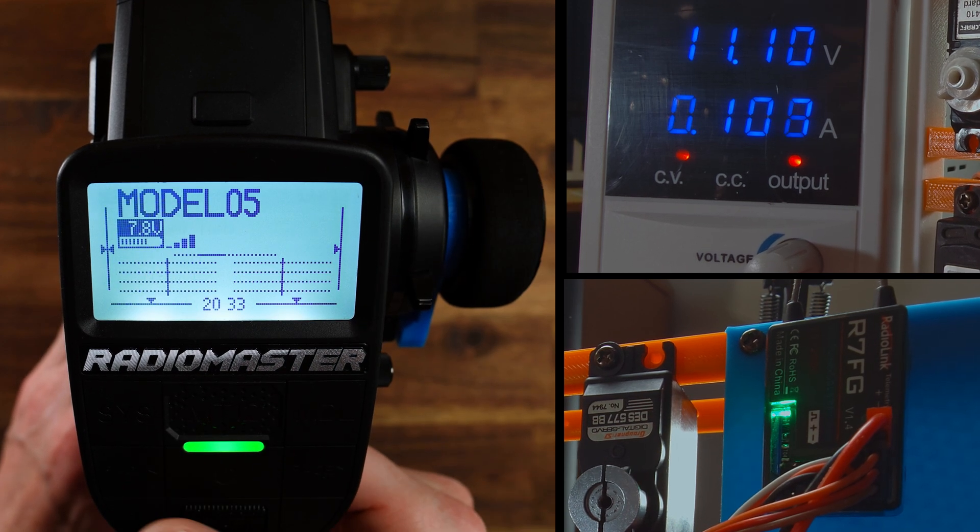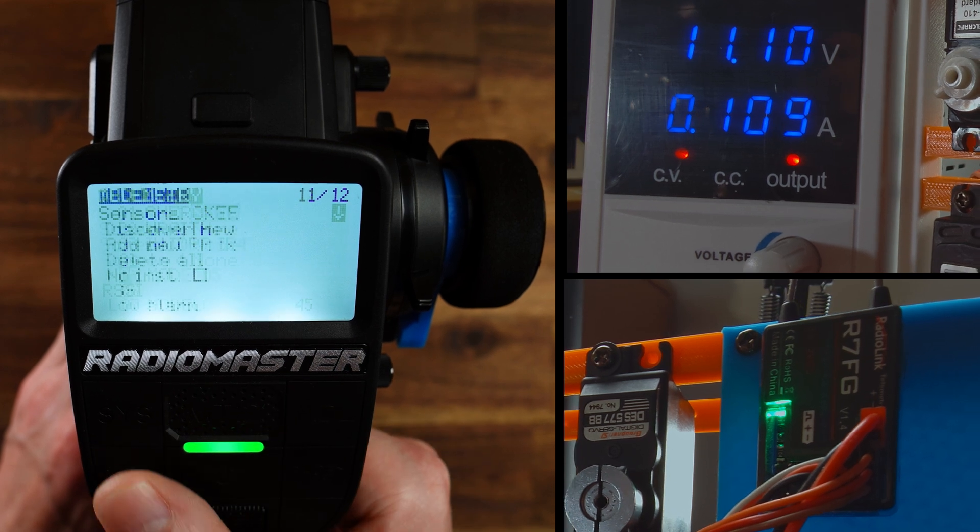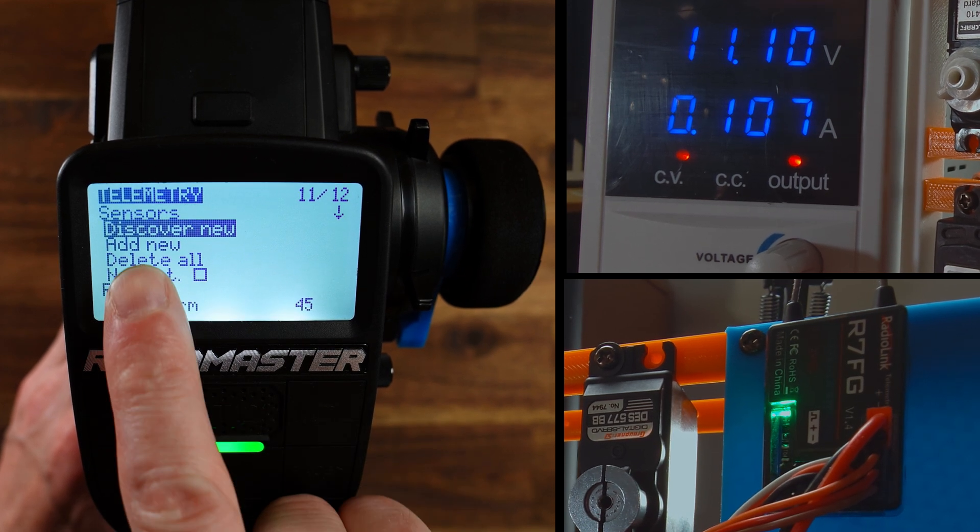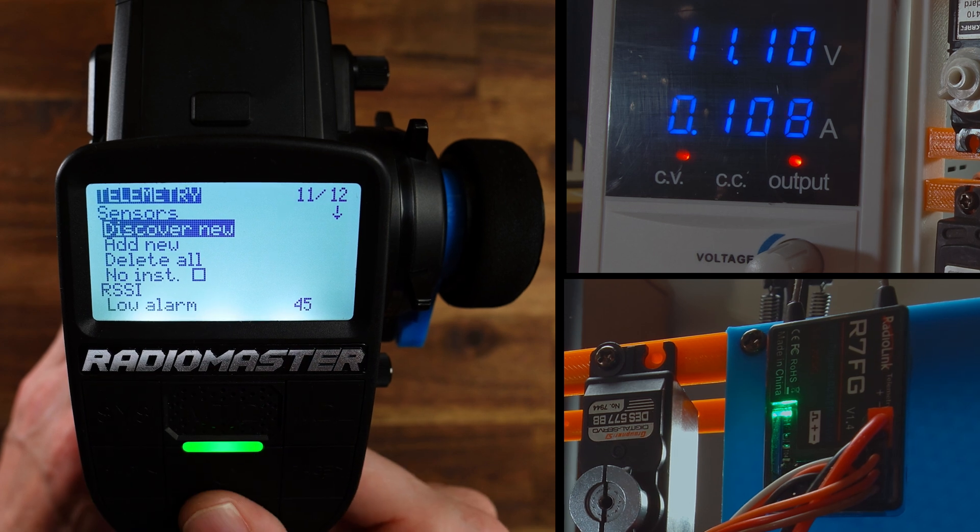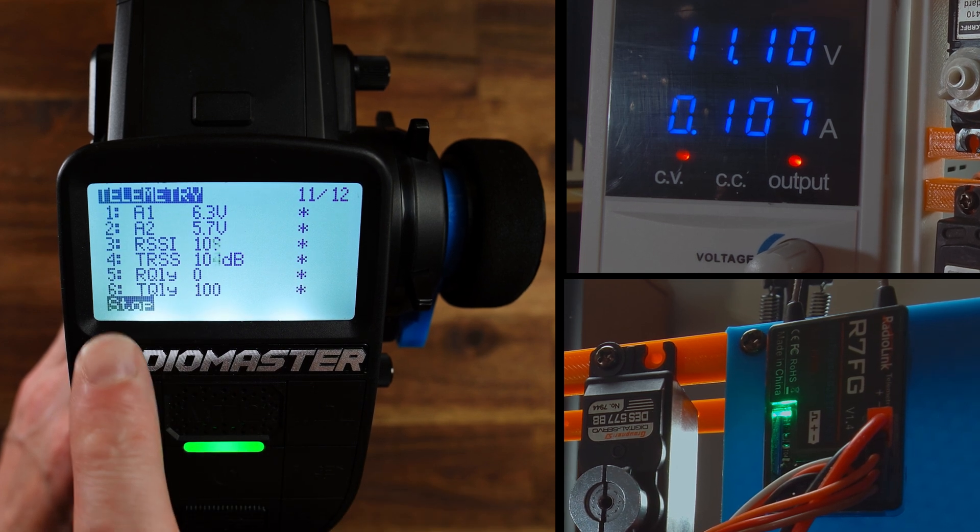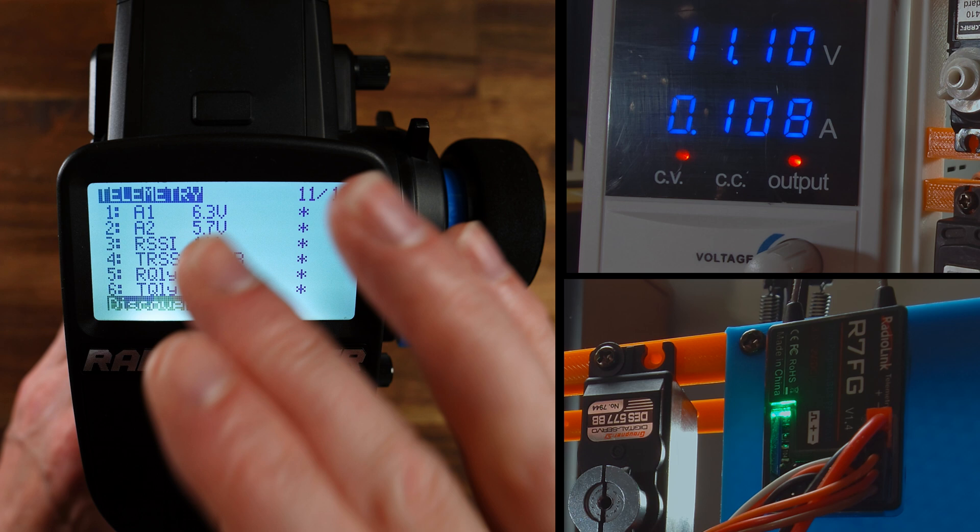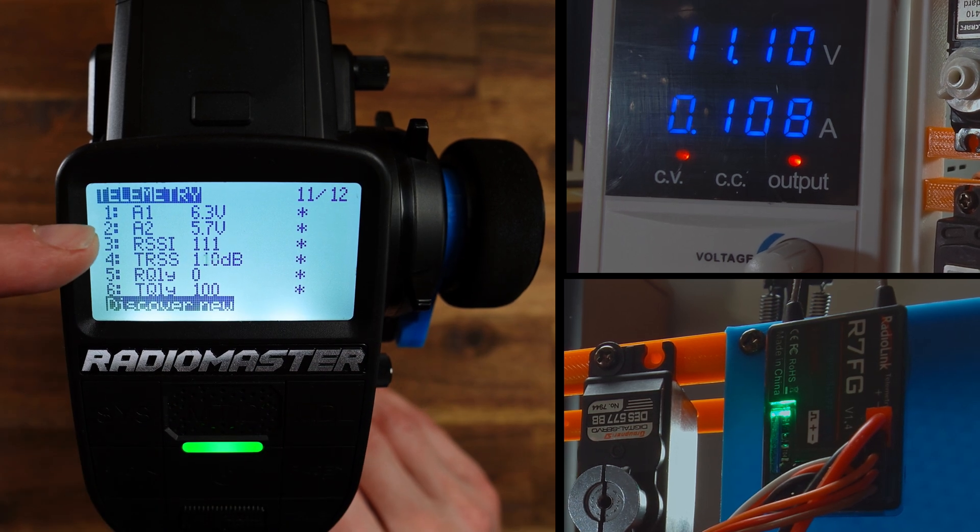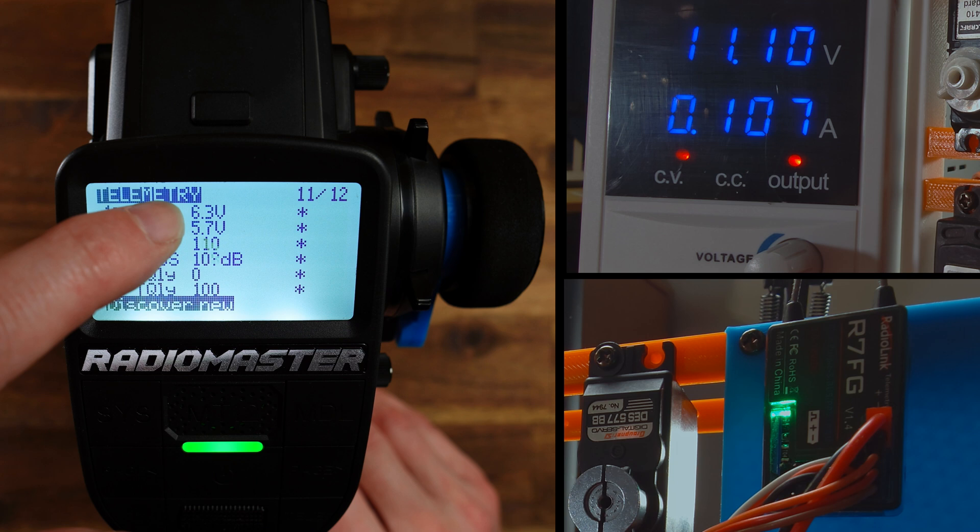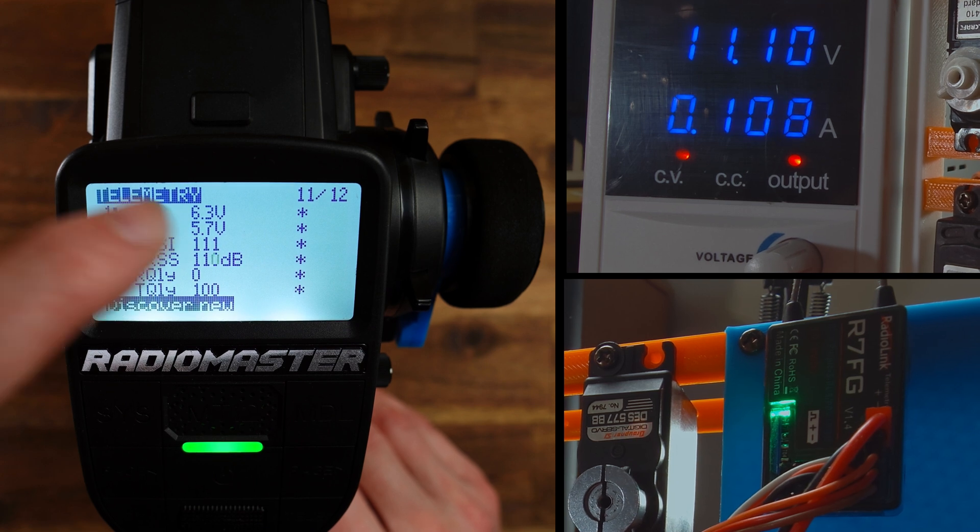We have to, oops, every time I click the wrong button here. You have to go to discover new to discover all the new sensors. And well that's it. We have 6 sensors here and as you can see the first and the second sensor are voltage values, 6.3 volts and 5.7 volts.